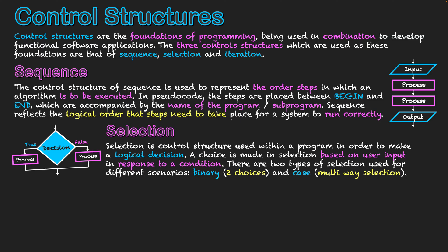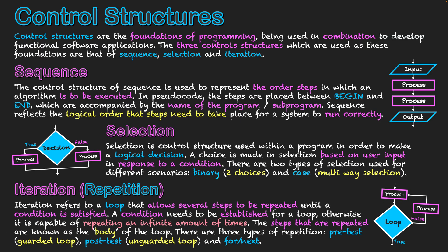The final control structure we'll look at is that of iteration or repetition. It refers to a loop that allows several steps to be repeated until the condition is satisfied. So the condition might not have been satisfied the first time we've logically got to that point in our program, but it will repeat the steps associated with the loop until the condition is satisfied.